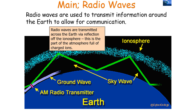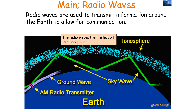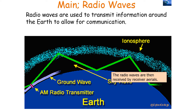The first wave we're going to look at in the electromagnetic spectrum is the radio wave. Radio waves are used to transmit information around the Earth to allow for communication. Radio waves are transmitted across the Earth via reflection off the ionosphere, which is part of the atmosphere full of charged ions. The radio waves are transmitted from a transmitter aerial, deflected off the ionosphere, and then received by the receiver aerials.